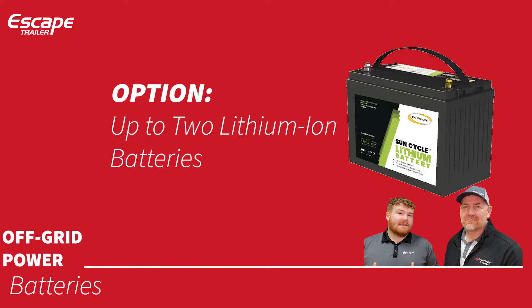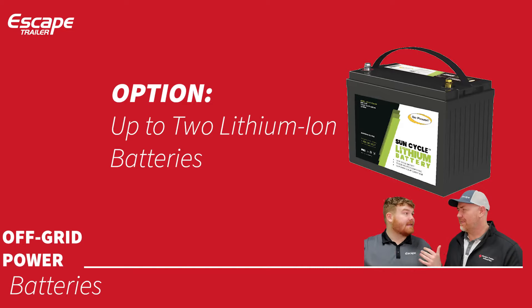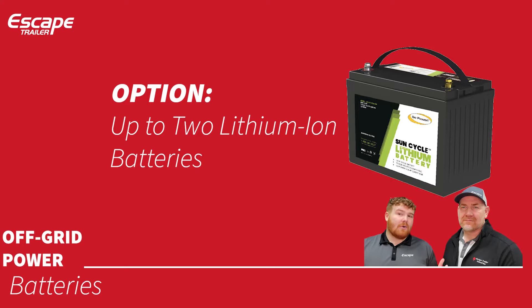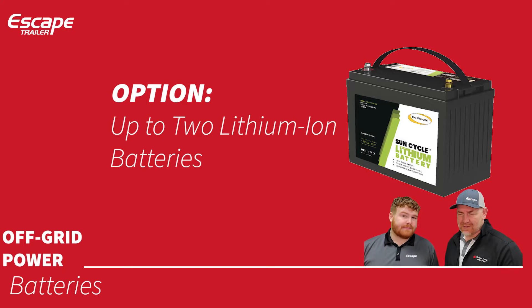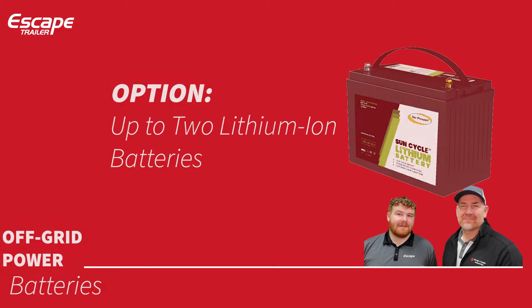Lithium batteries can theoretically discharge to zero percent, but we recommend staying around 30%, giving you 70 usable amp hours from each 100 amp hour battery. You can get up to two lithium batteries. The main benefit is they last so much longer than lead acid. More power, less maintenance, and better longevity — so run on lithium.